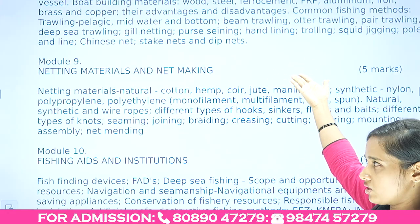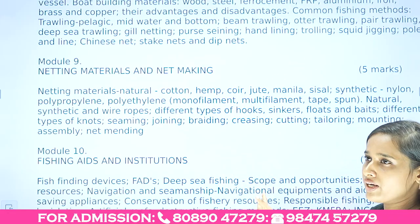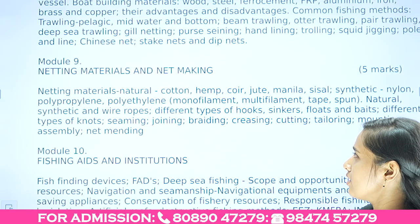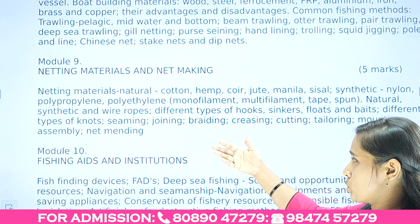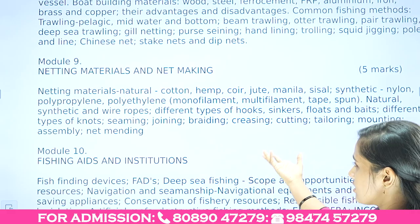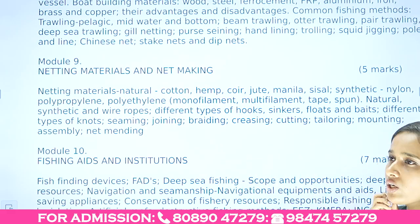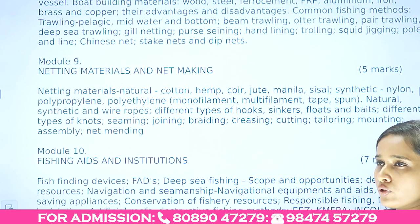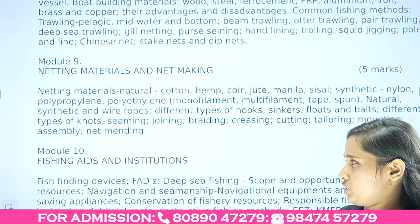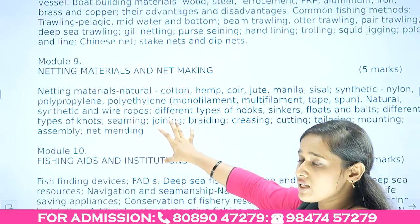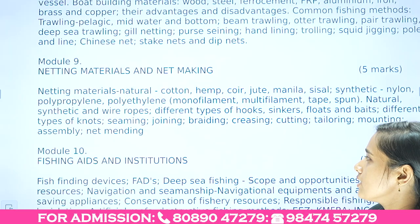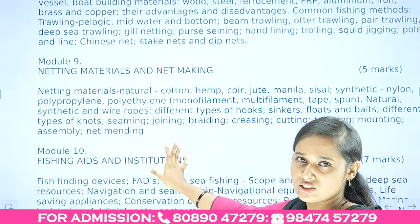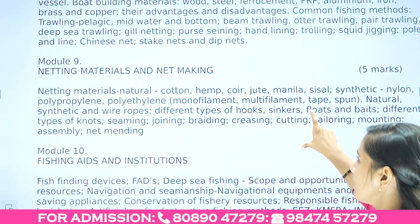Module 9 is a continuation of gear and craft technology, focusing on gear-related topics: netting materials and net making. It covers natural and synthetic net materials, different types of hooks and sinkers, various equipment used with nets for smooth capturing of fish, and net-making techniques such as seaming, joining, and braiding.